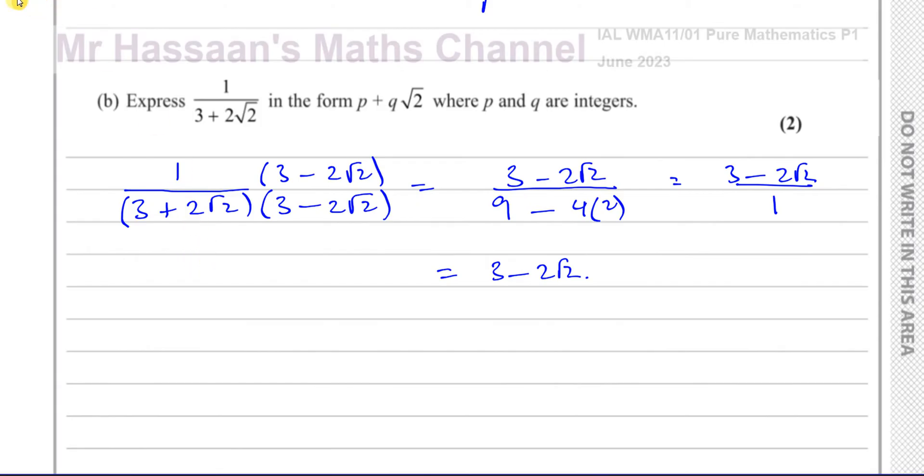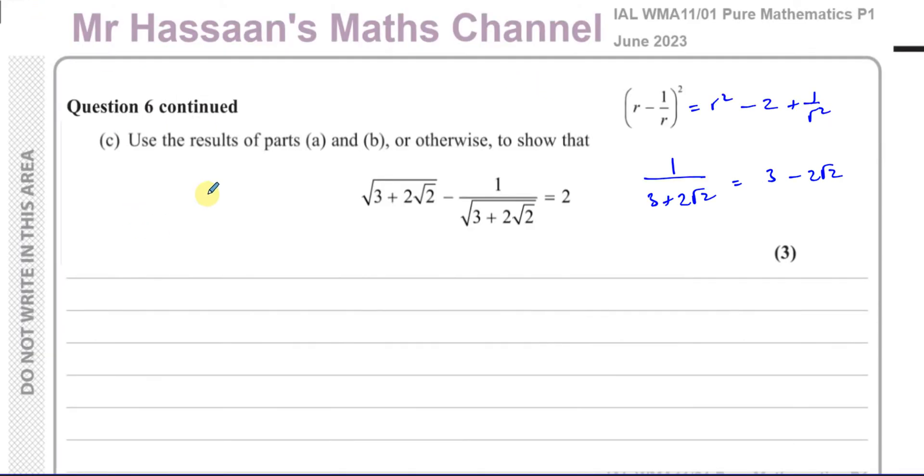Pretty simple. So now for part C. Part C tells us to use the results in part A, which I've written here, and part B, which I've written there, or otherwise to show that this expression equals 2. If I look at this, I can compare this to that. That's why it says use the results of part A and part B. This kind of looks like what's inside the bracket without being squared. So what I could do is say, let me take, I know that R minus 1 over R squared is equal to R squared plus 1 over R squared minus 2. I just wrote it in that way.